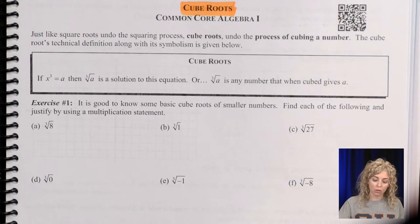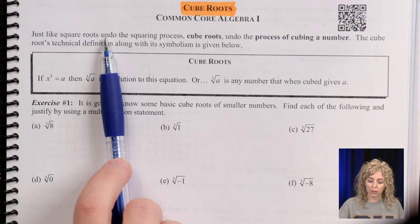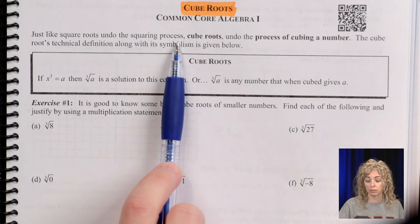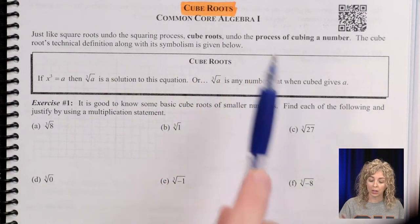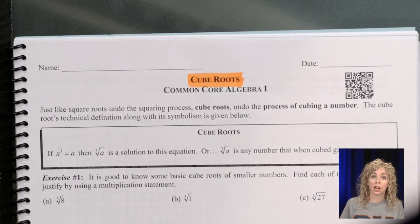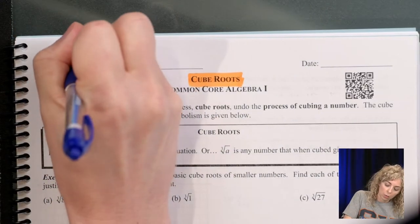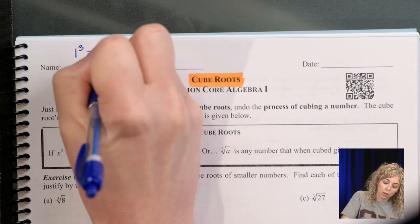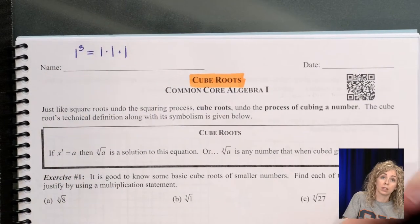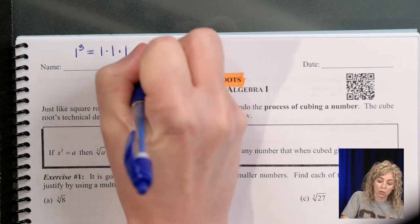Just like square roots undo squaring, cube roots undo the process of cubing. Let's take a minute at the top and write what 1 cubed is. So 1 cubed means 1 × 1 × 1, which is 1.